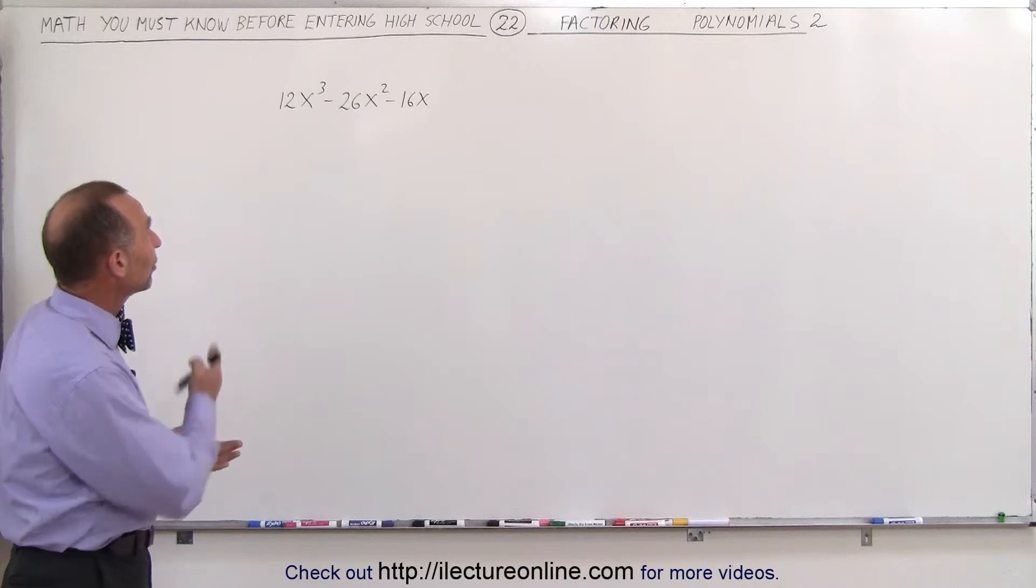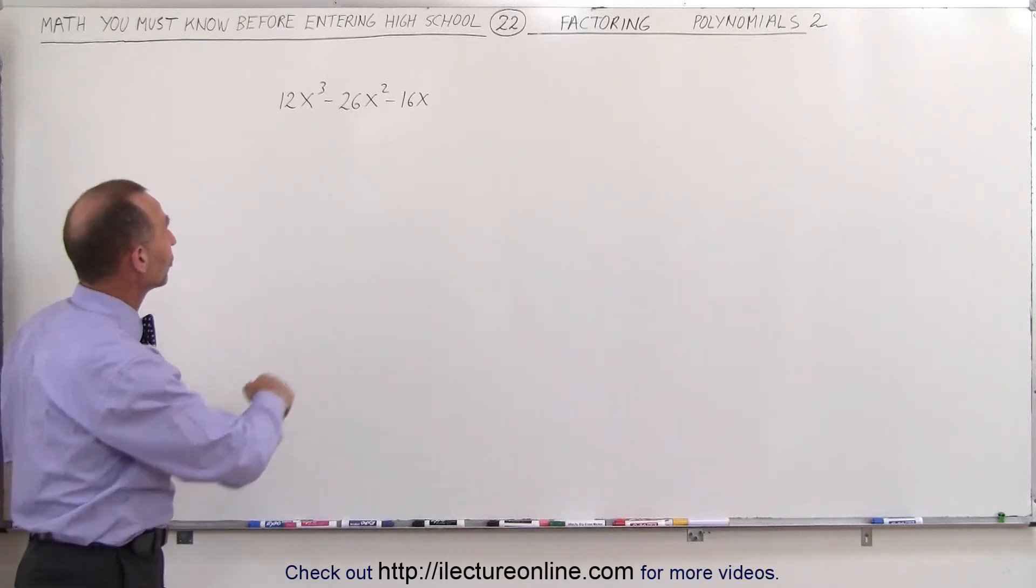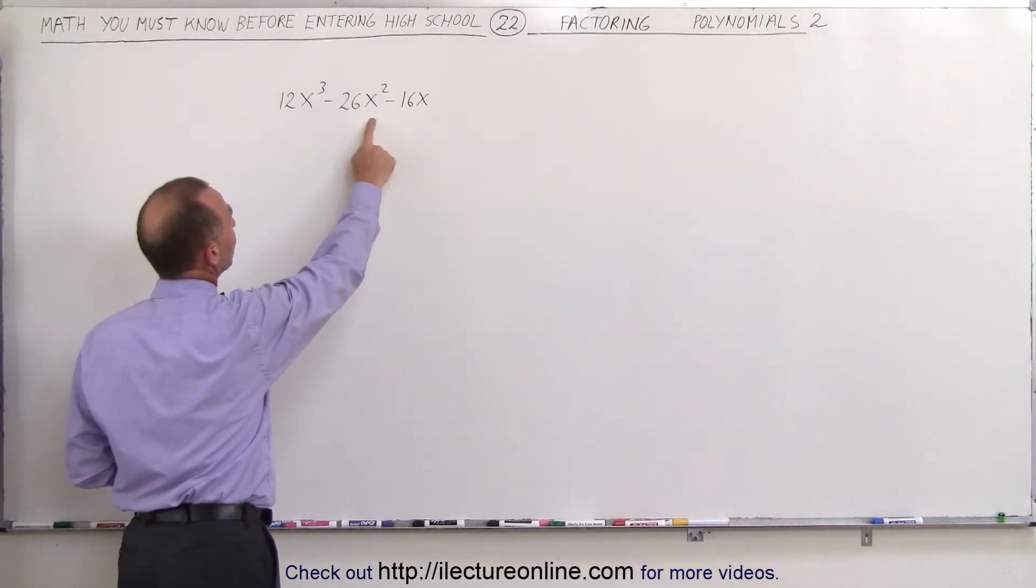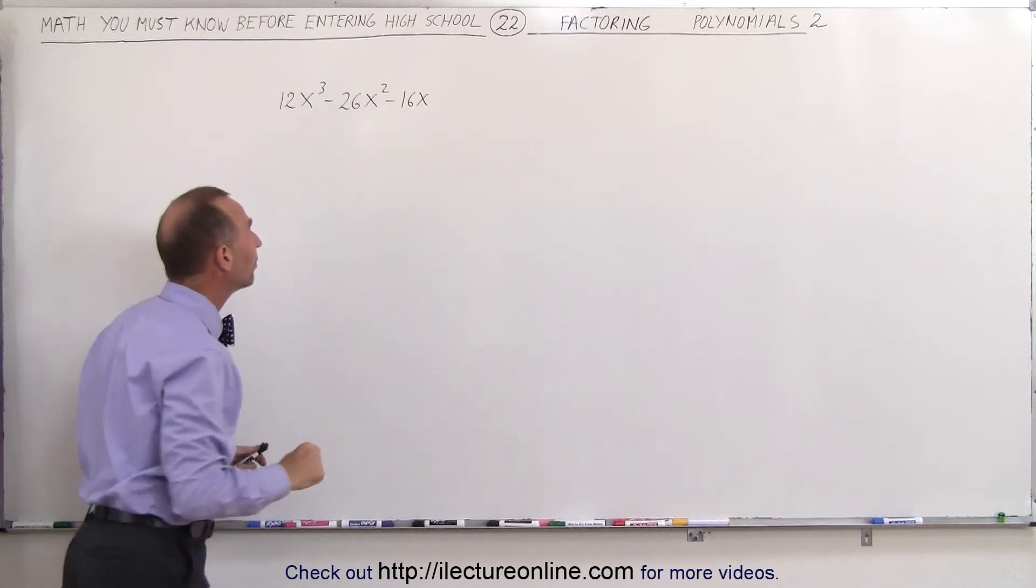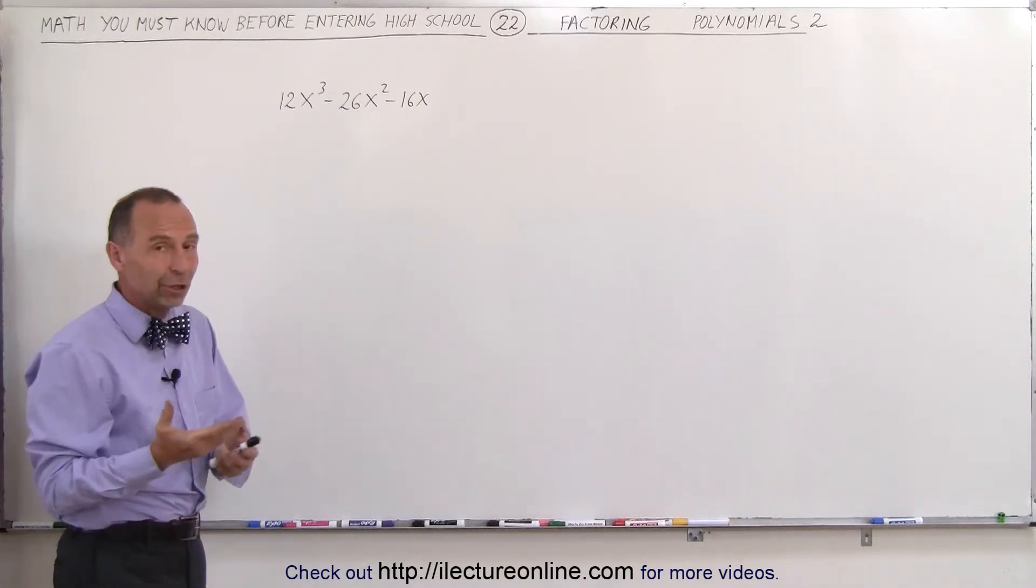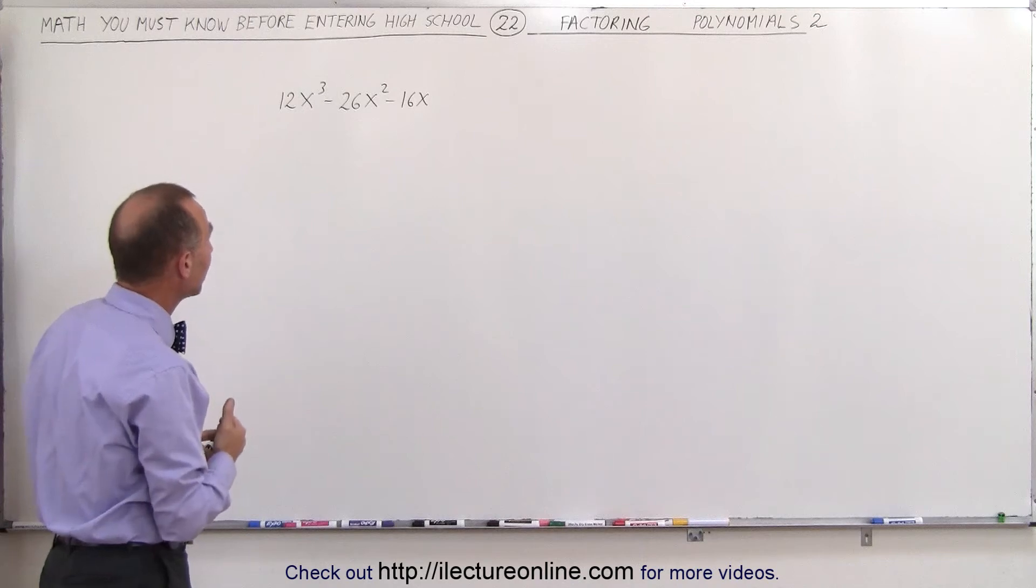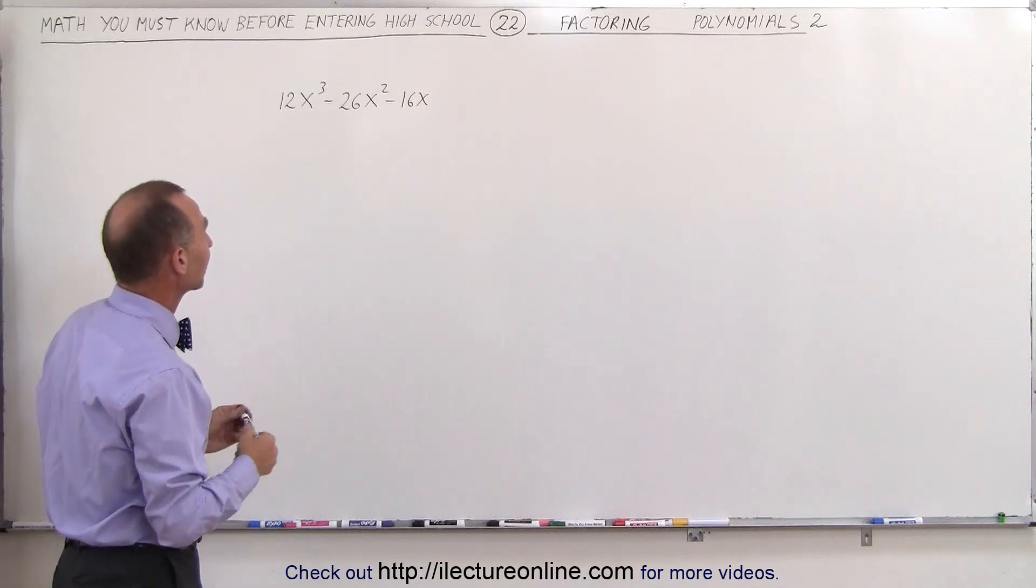The first thing we want to do is see if there's any common factors. Notice there's three terms - 1, 2, and 3 - separated by negative signs. In each term we have an even number, which means we can factor out a 2, and we have an x we can factor out as well.